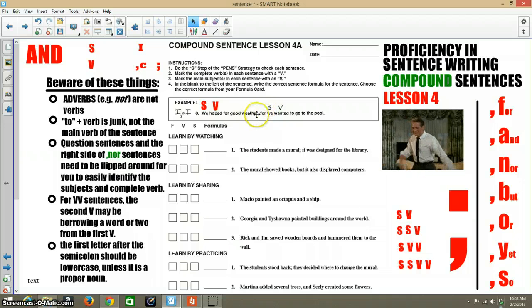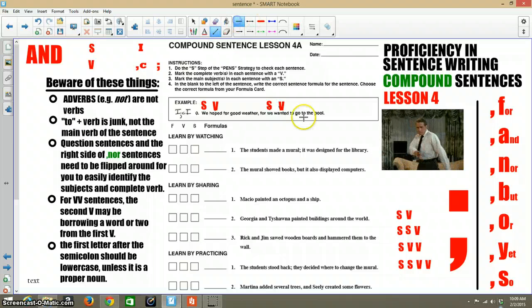Then there's the comma fanboys, and so then you have a sentence to the right. The subject is we, and the verb is wanted. Remember that to go, to plus a verb is junk, not the main verb of a sentence, so to go to the pool, that's just junk.